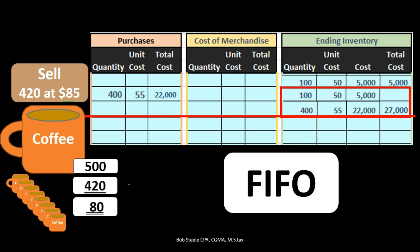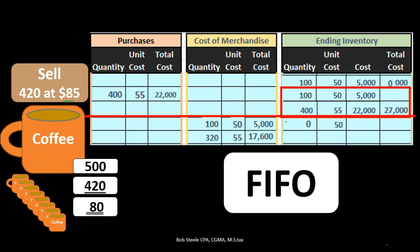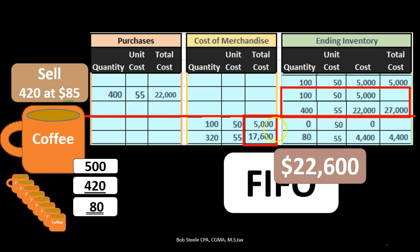Now we're selling 420 of them — the question is which ones do we sell first? Under FIFO, we sell the older ones first. So we sell 100 at $50, which wipes out that layer, then sell another 320 at $55 to bring us up to the 420 total. That gives us $17,600 for the second layer. Ending inventory: 80 units remain at $55, so ending inventory in dollars is $4,400. Cost of goods sold is $5,000 plus $17,600, totaling $22,600.